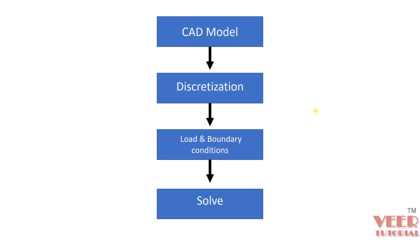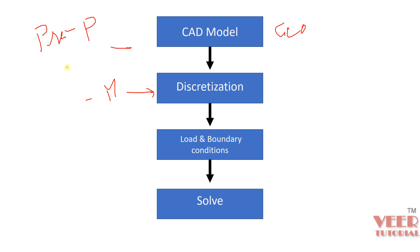These are the general steps that are to be followed when we perform any analysis. First of all, we need a CAD model. The CAD model is basically the geometry, and this part is called preprocessing in finite element analysis. So after we import the CAD geometry, we need to discretize it. This discretization part is basically called meshing, and in this meshing we have to select the type of element we want. After we complete the meshing, we apply load and boundary conditions and then we solve the problem.